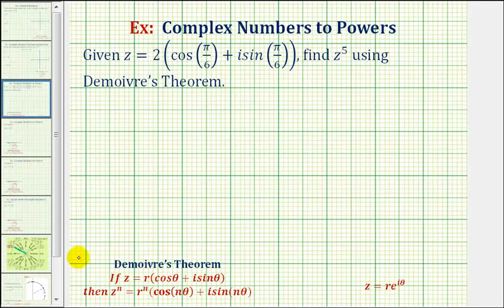Well, de Moivre's theorem is stated here below. If we have a complex number given in polar form, as we see here, then z to the nth power is equal to r to the nth times cosine of n times theta plus i sine of n times theta.